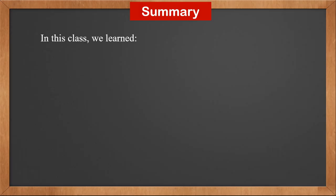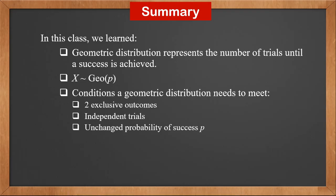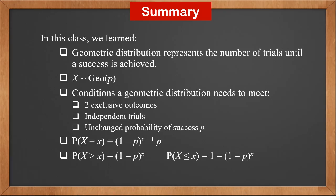In this class, we learned that geometric distribution represents the number of trials until a success is achieved, written as X ~ Geo(p). Conditions it needs to meet: each trial has 2 exclusive outcomes; trials are all independent; the probability of success p remains unchanged. P(X = x) is (1 minus p) to the power x minus 1 times p. P(X > x) is (1 minus p) to the power x. P(X ≤ x) is 1 minus (1 minus p) to the power x. The expectation is 1 over p.